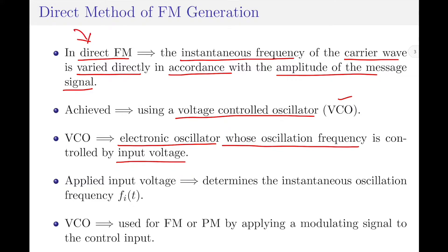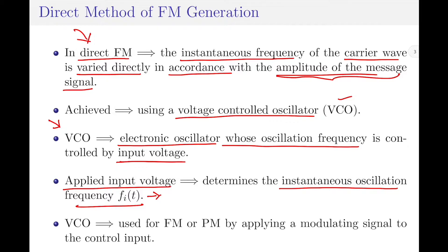If you come back to the definition of direct FM, it says the carrier frequency is varied with respect to the amplitude of the message signal. And a VCO is an electronic oscillator whose oscillation frequency is varied by using the input voltage. So the definitions of direct FM and VCO kind of match. Therefore, I can use a VCO to generate frequency modulated signals using direct FM systems. It must be noted that in direct FM systems, the applied input voltage determines the instantaneous oscillation frequency F_i(t). We can finally say that a VCO can be used for both frequency modulation as well as phase modulation by applying a modulating signal as the input signal.